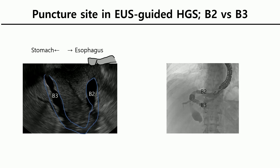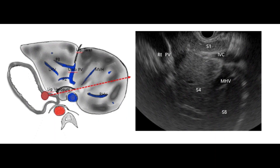This slide shows a dilated bile duct of the left liver, B3 and B2. On the fluoroscopy imaging, I punctured the B2 area with contrast injection, and the bile ducts B2 and B3 were visualized. This demonstrates how to examine the left liver by EUS.